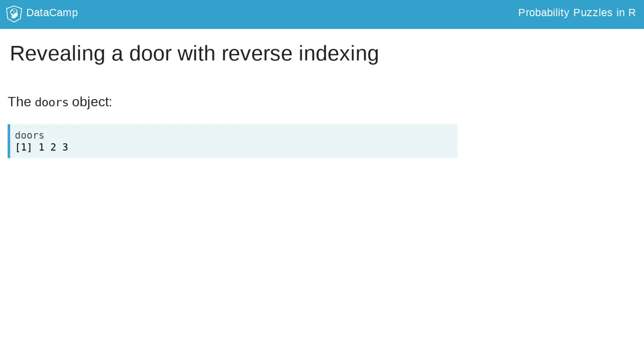To solve this problem, we need to handle some R indexing, specifically when determining which door the host should reveal.